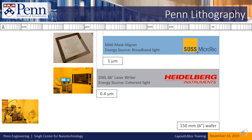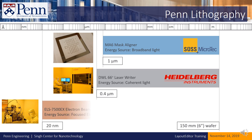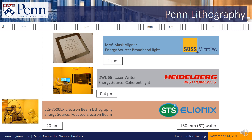If you need to print features smaller than 400 nanometers, you should consider using the Allionics ELS7500EX Electron Beam Writer. This tool can write features down to around 20 nanometers, but the write times for the Allionics are much longer than they are for the Heidelberg or the MA6.